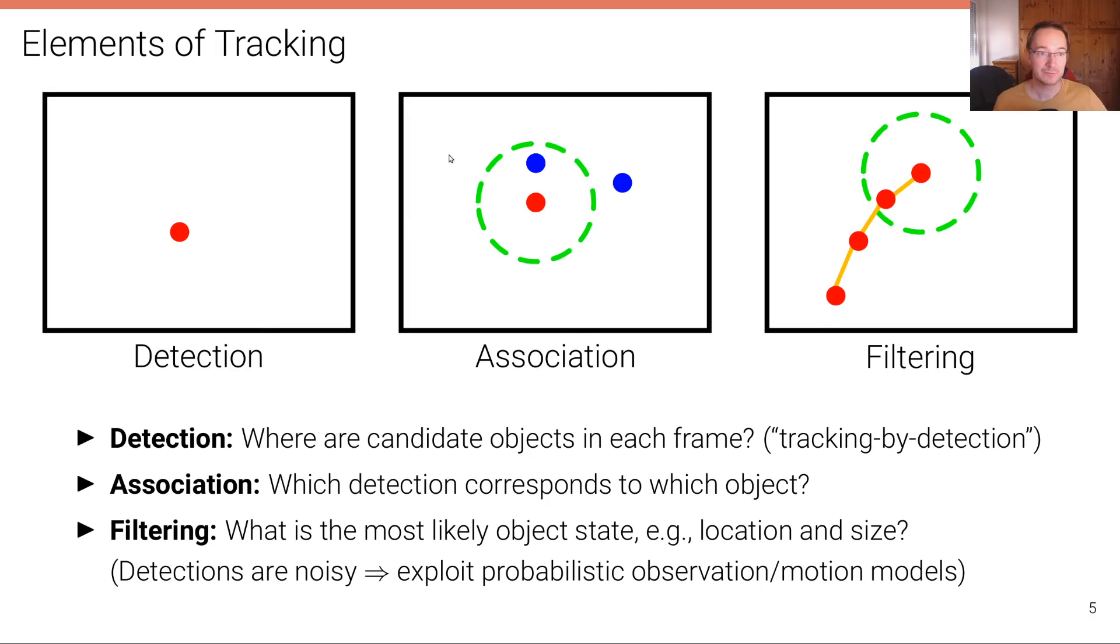The second problem that we have to solve, the second element of tracking is the association problem. Here we're asking the question, which detection corresponds to which object? For example, here we have this object predicted one frame into the future. And this is the prediction here in red and we have two observations. Now we need to figure out which of these observations is actually the same object in order to associate this detection to that object track and to continue estimating the state of that object.